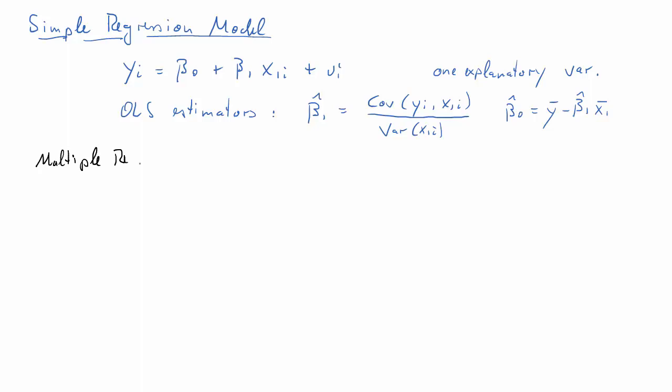So what happens if we have a multiple regression model? That means rather than just one explanatory variable we'll have more, or as above we could always add the constant as another explanatory variable. So here we have a model yi is equal to beta 0 plus beta 1 x1i plus beta 2 x2i plus beta 3 x3i plus an error term ui.